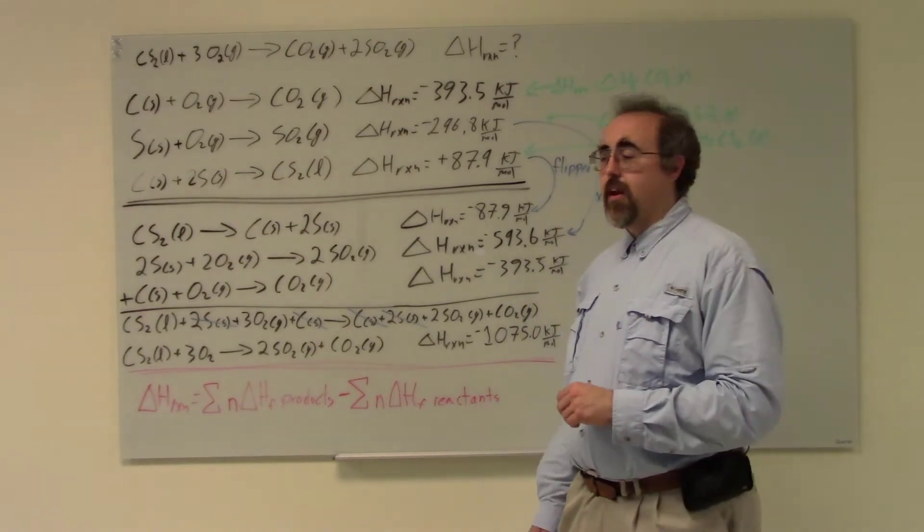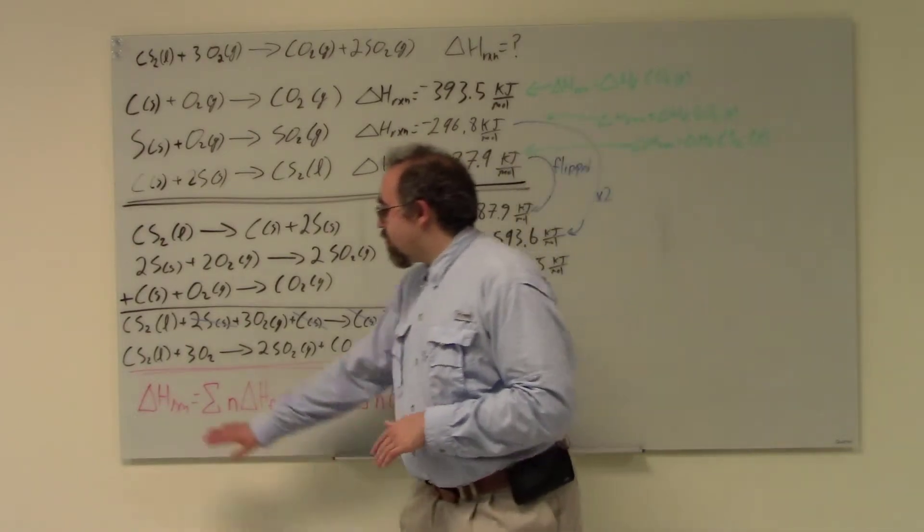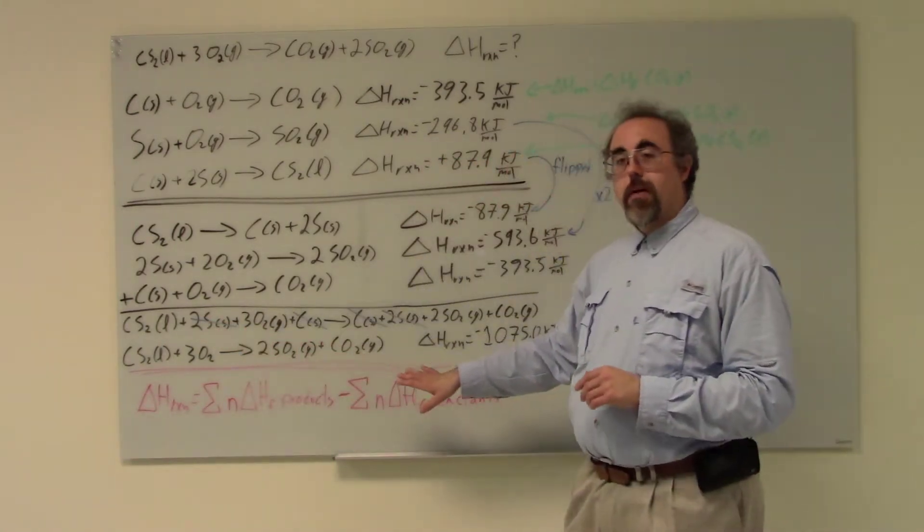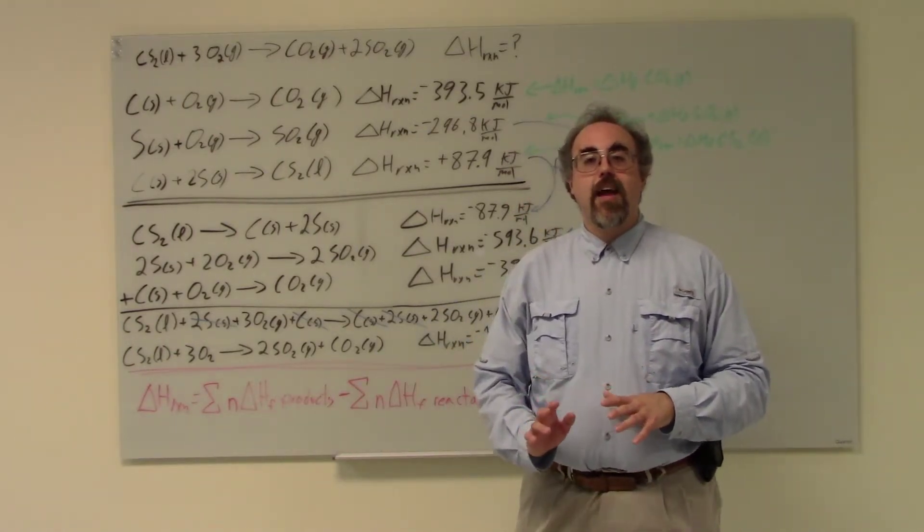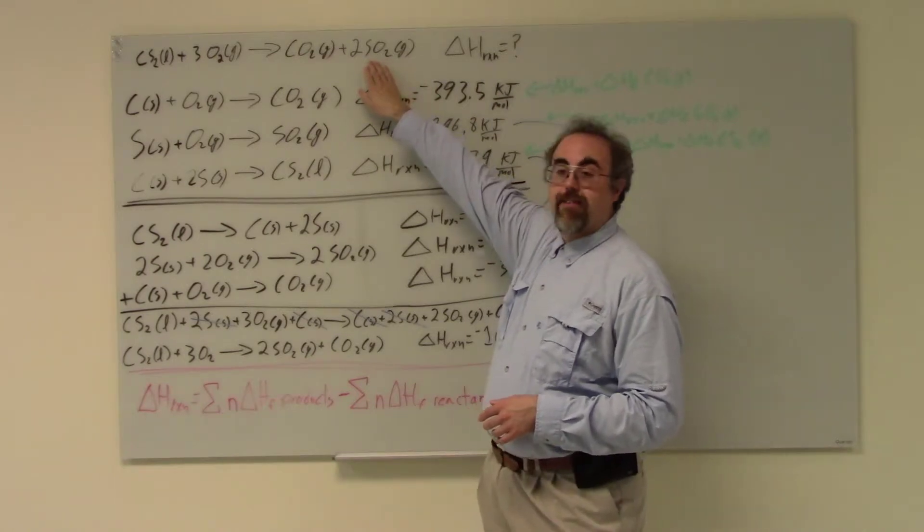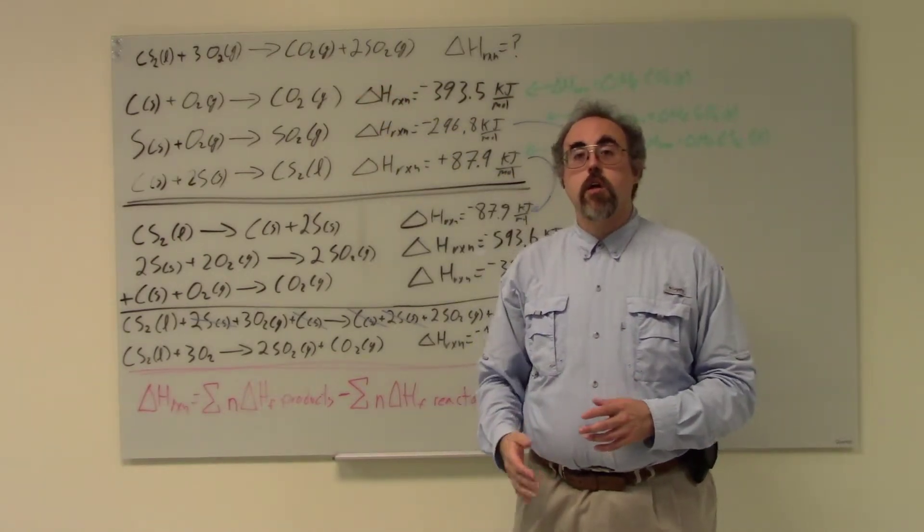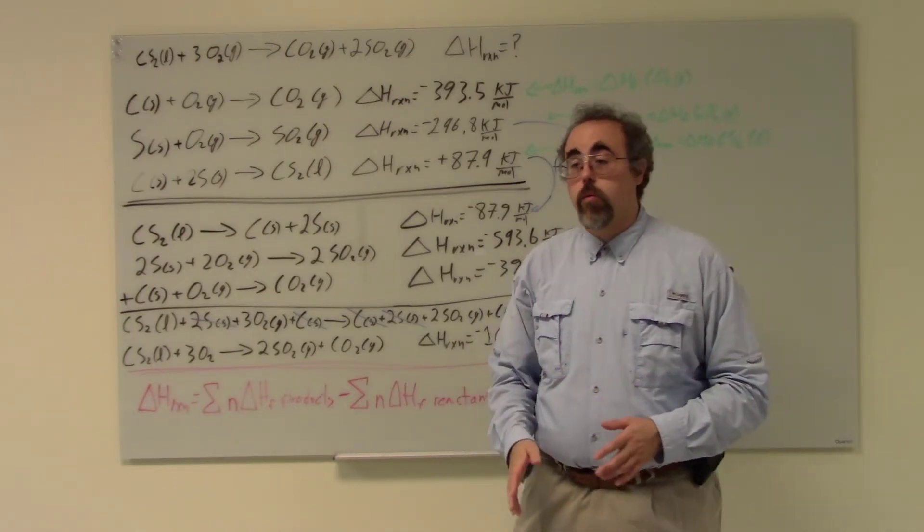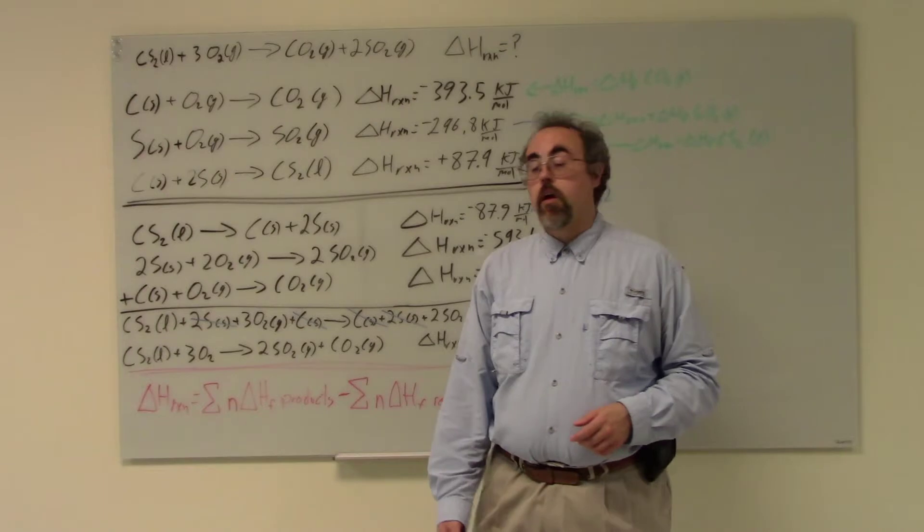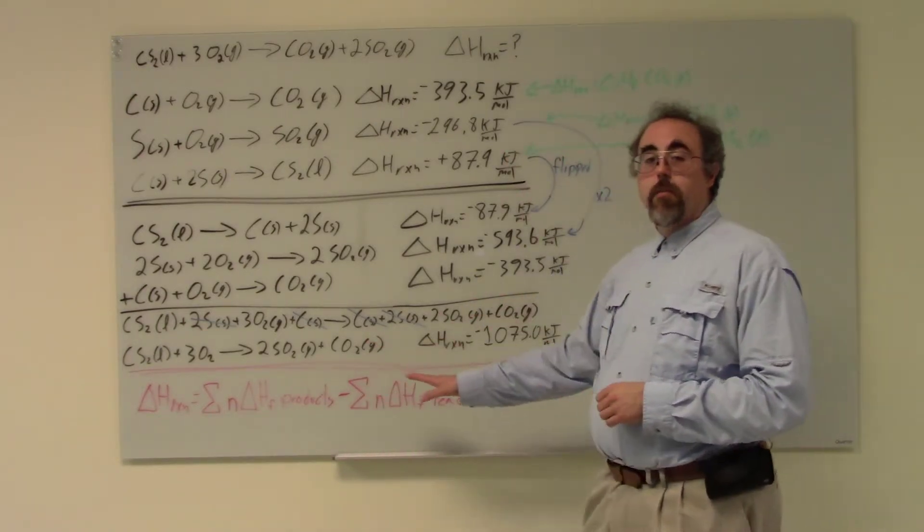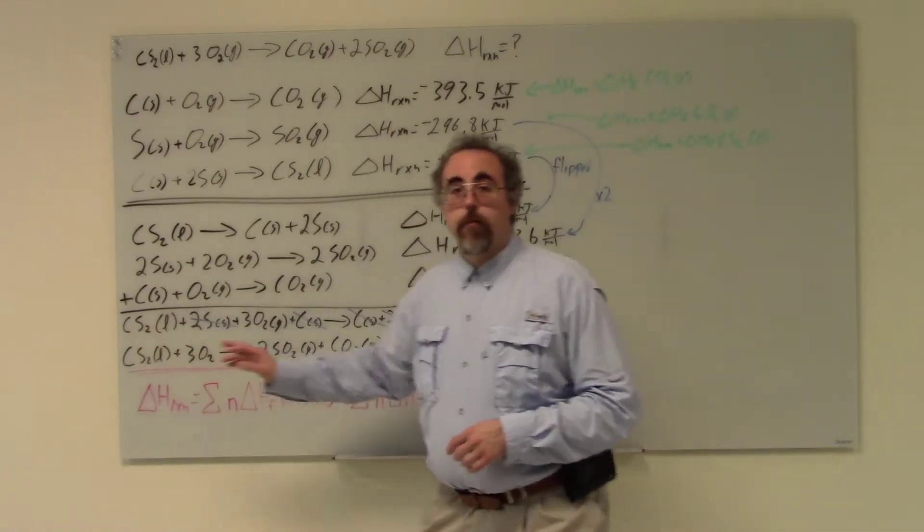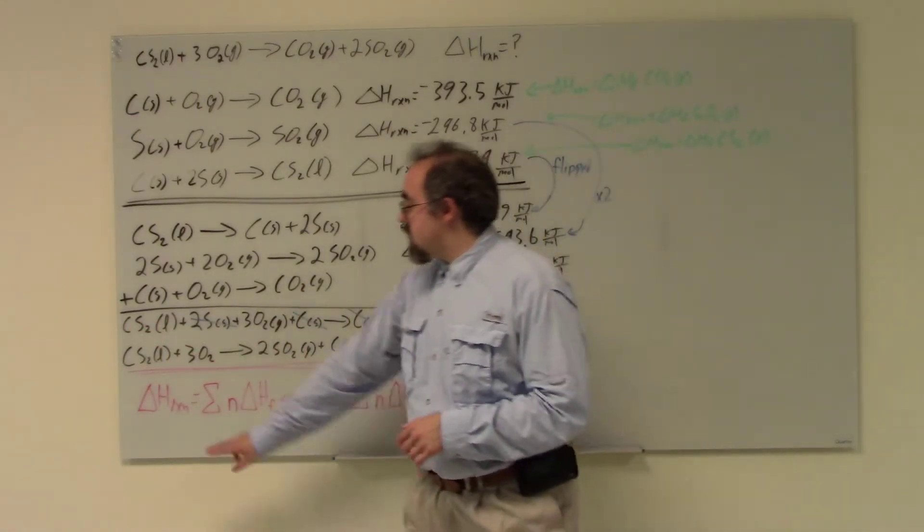But if they are heats of formation, which they typically are because those are things you can look up in a table pretty easily, then your delta H of your reaction is going to be the sum of all of the heats of formation of your products. Now if there is, say, two products of the same type being produced, I'm going to multiply it by two. So in my reaction, I'm forming two SO2s, so I'm going to multiply my heat of formation for my sulfur dioxide by two. That's what the N says. The N is the coefficient. So all of the heats of formation multiplied by their coefficient, subtracting the sum of all of the heats of formation multiplied by their coefficient of the reactants. So this is products minus reactants.